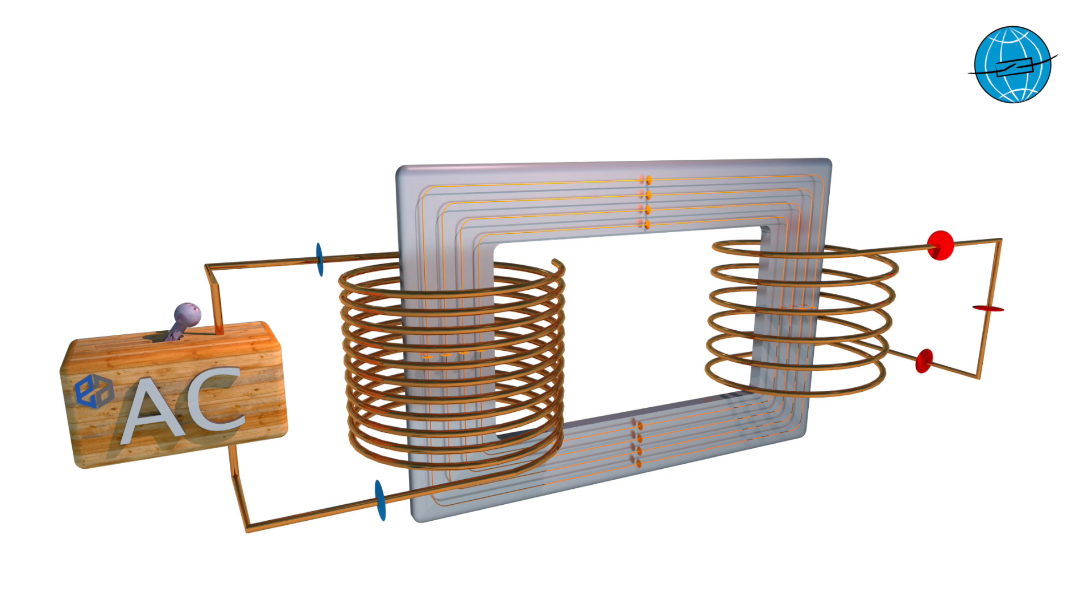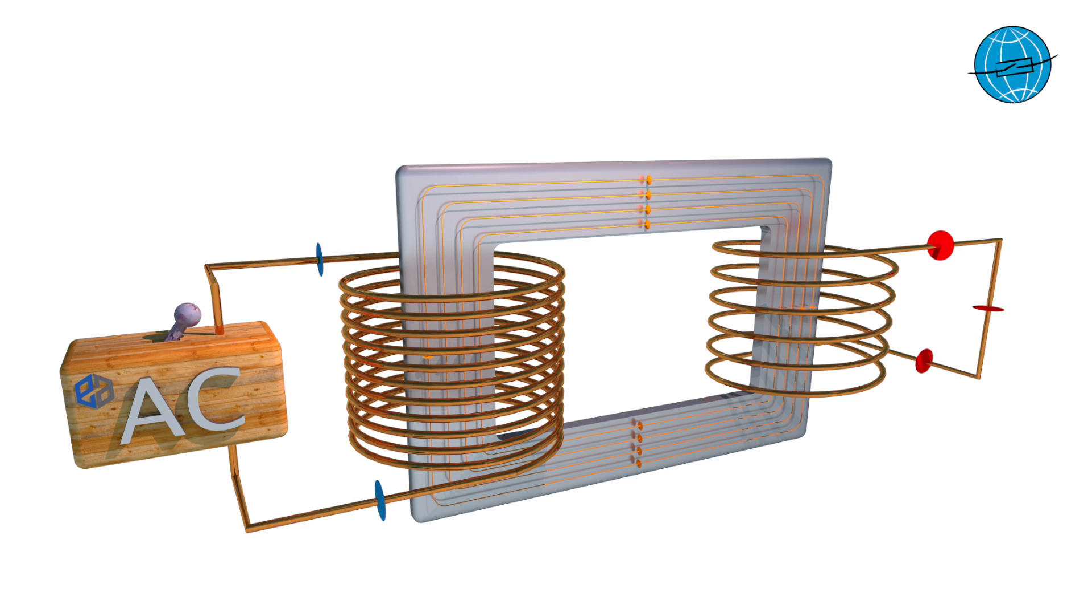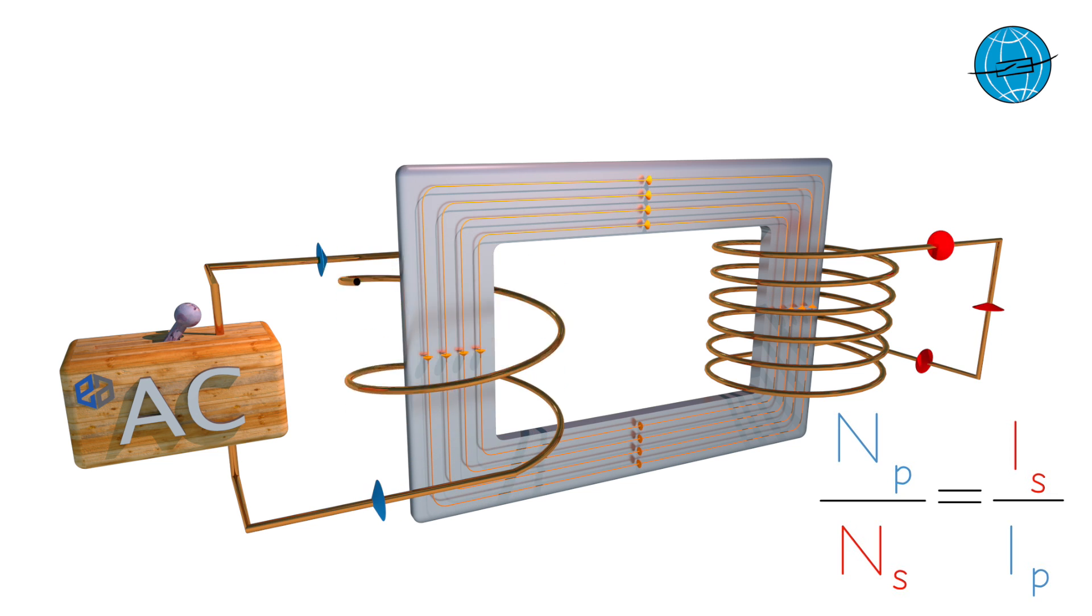If we now increase the number of turns of the primary winding, the secondary side current also increases. The ratio between primary and secondary side is: the number of primary turns NP are related to the number of secondary turns NS, as is the secondary current IS to the primary current IP. If we reduce the number of turns on the primary side, the resulting current on the secondary side also decreases, and we get the typical transmission characteristic for current transformers.